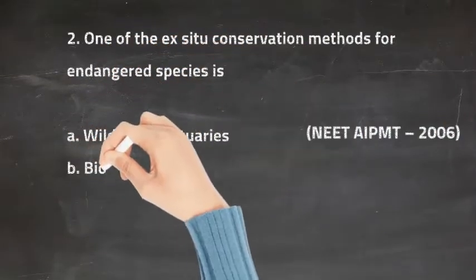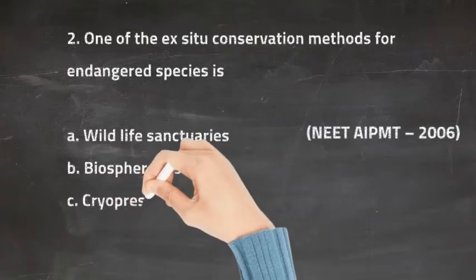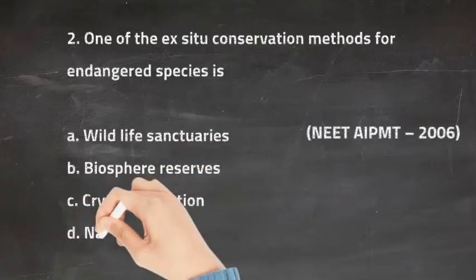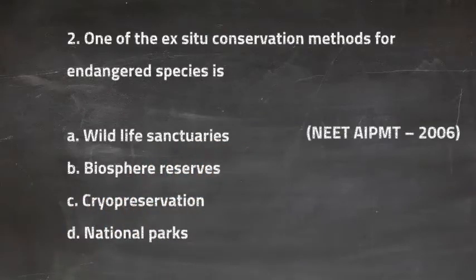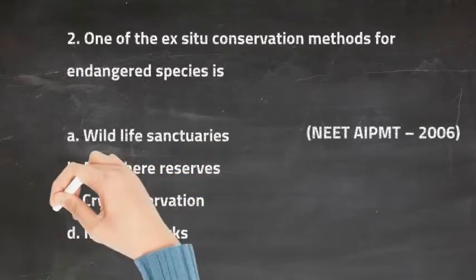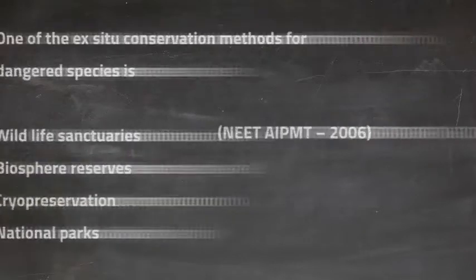Q2: One of the ex-situ conservation methods for endangered species is — Option A Wildlife Sanctuary, Option B Biosphere Reserves, Option C Cryo-Preservation, and Option D National Parks. The right answer is Option C, Cryo-Preservation.